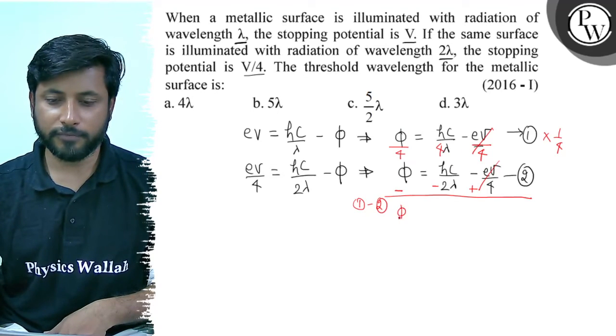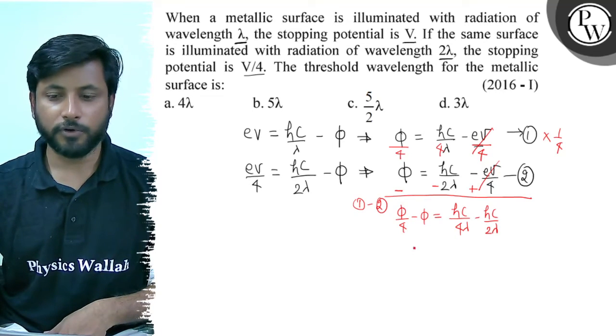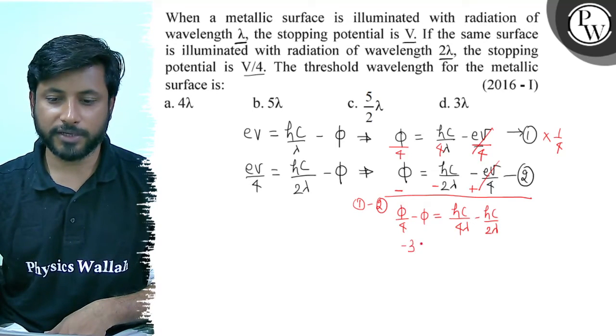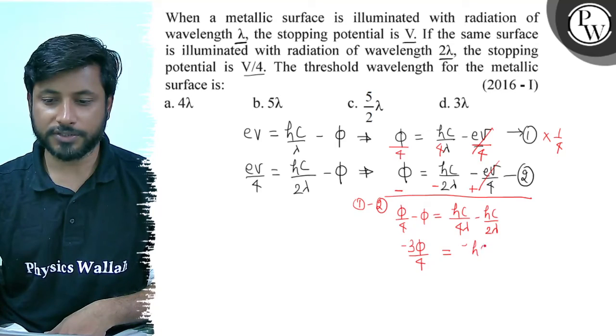We have phi by 4 minus phi, and on the right hand side we have hc by 4 lambda minus hc by 2 lambda. This gives us minus 3 by 4 phi and minus hc by 4 lambda.